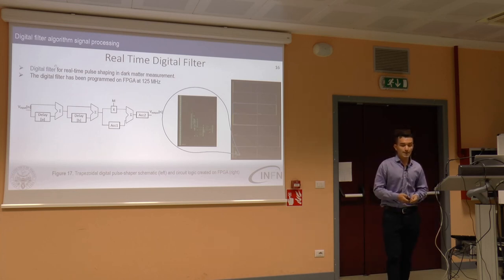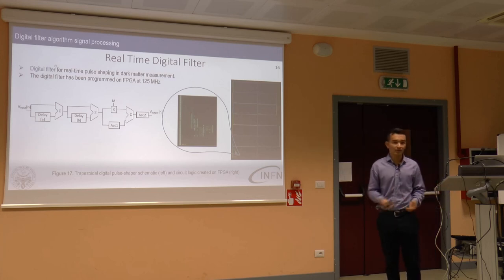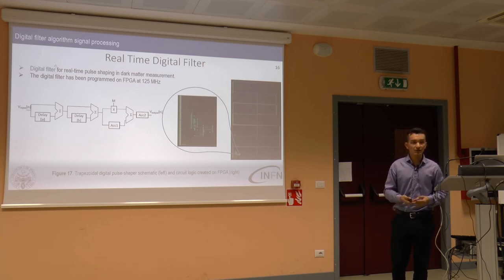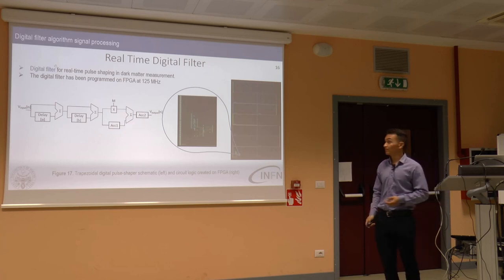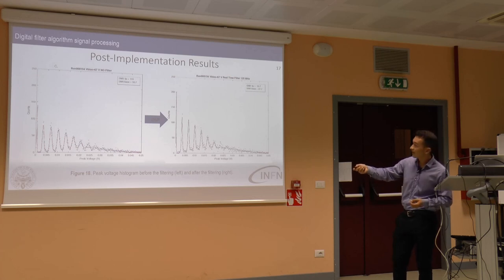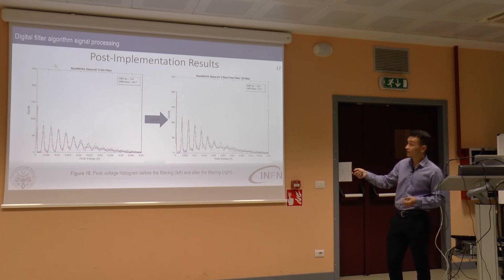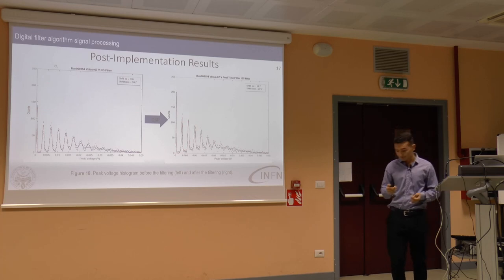In order to further improve the signal-to-noise ratio — which is already optimal for the experiment and the collaboration is satisfied with the results — we implemented a simple real-time digital filter: a trapezoidal digital pulse shaper running on an FPGA at 125 MHz. The histogram before and after filtering shows that the standard deviation of the peak is lower and the peak amplitude is higher after filtering, confirming the filter works correctly.